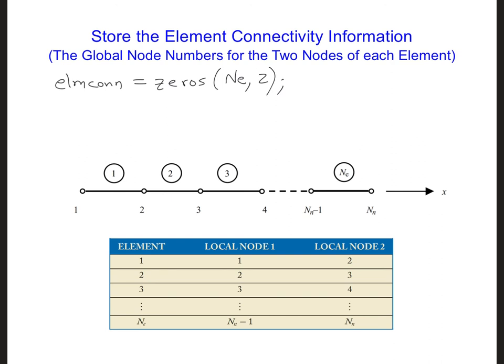In other words, here's a table showing the element connectivity information. The left column here is the first index, i, so if this is i, j, we have the element number that corresponds to i.